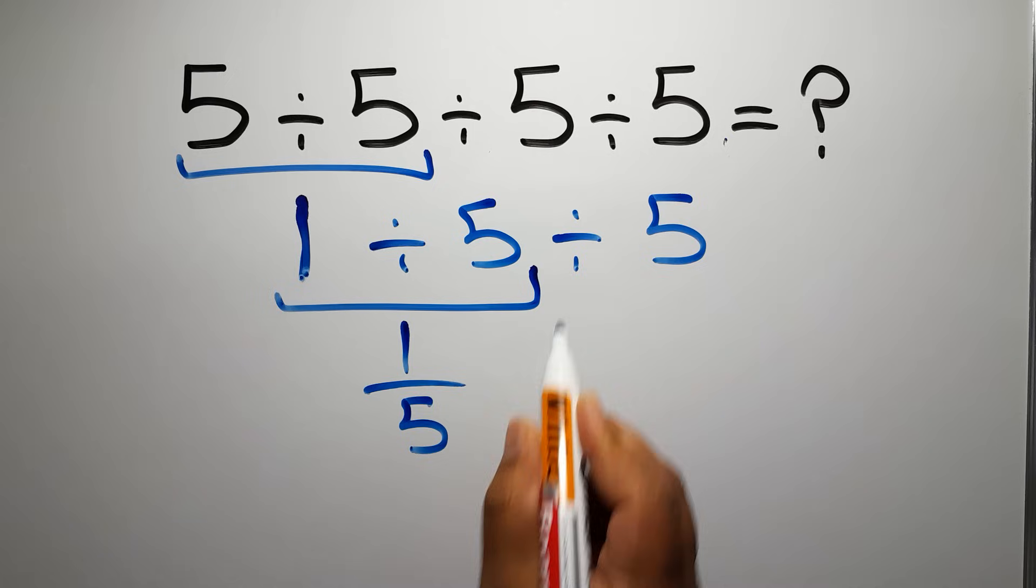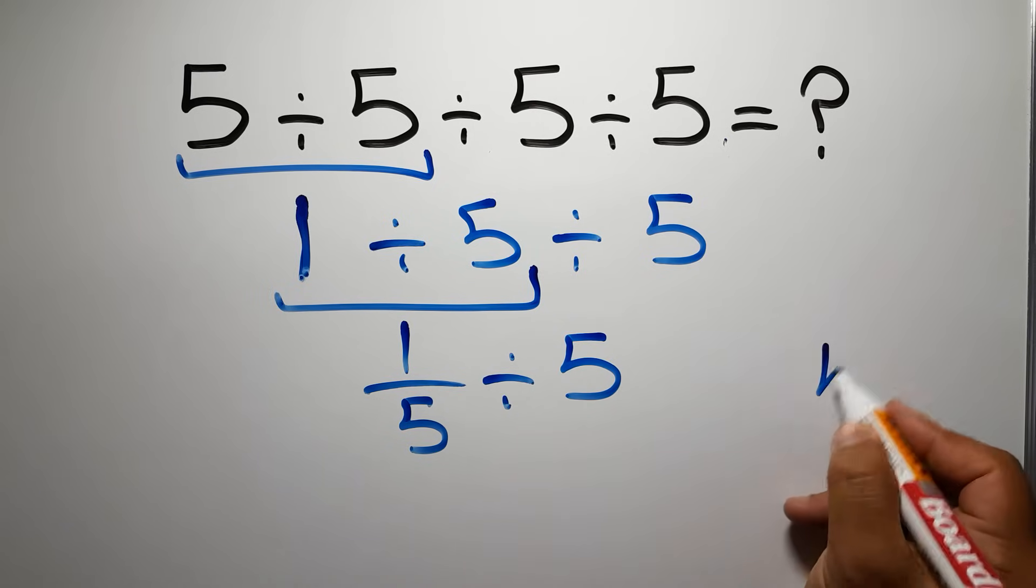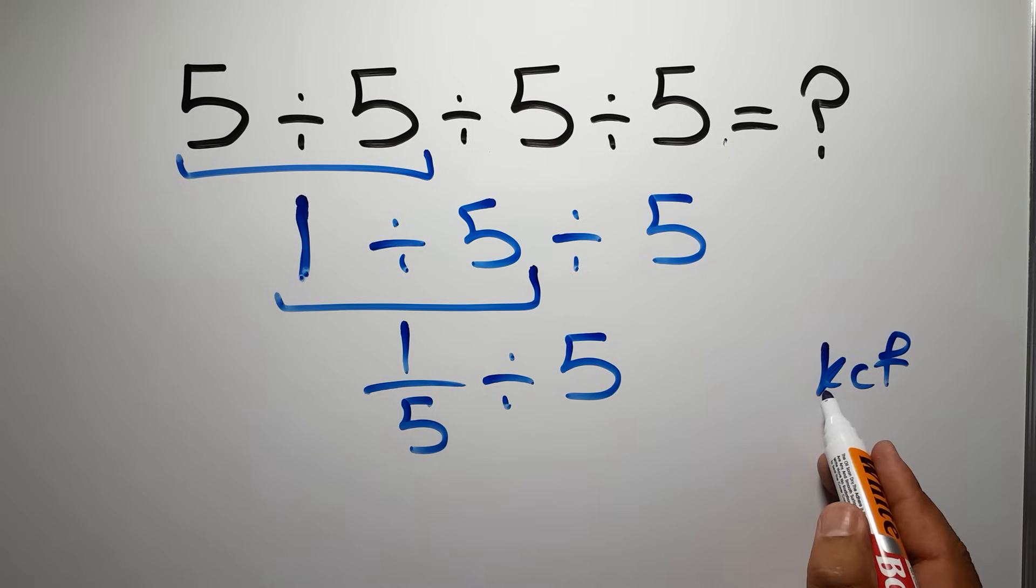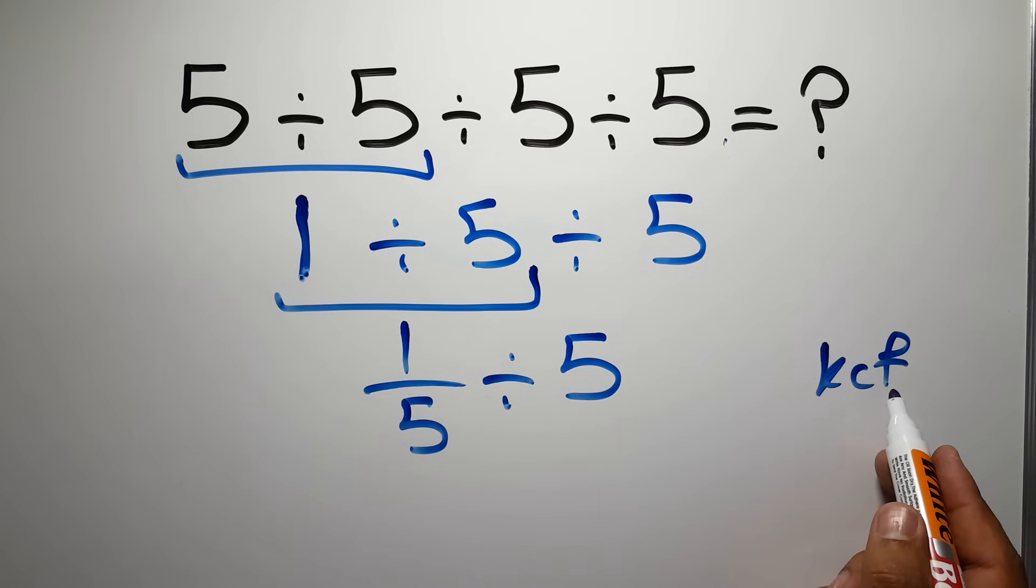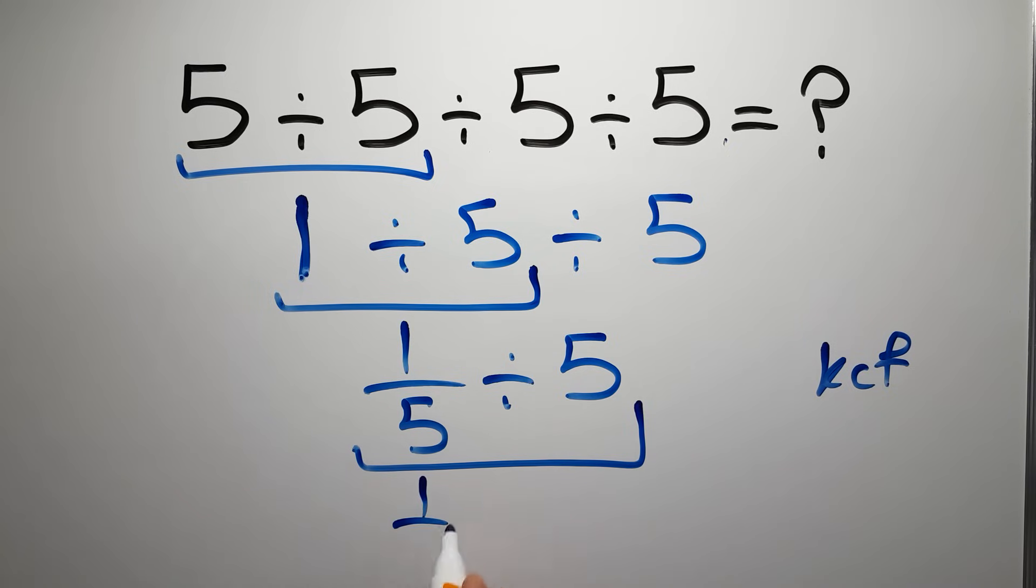Then divided by 5. Now according to the KCF rule, K stands for keep, C stands for change, and F stands for flip. We can write: keep the first fraction 1 over 5, change division to multiplication, and flip the second fraction.